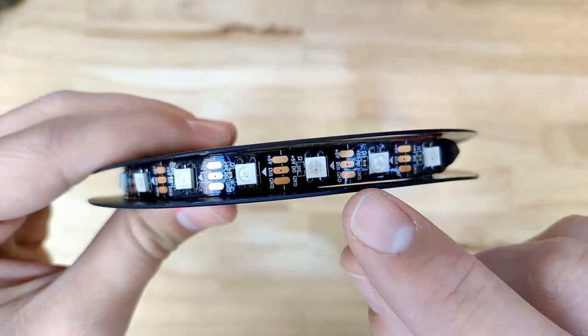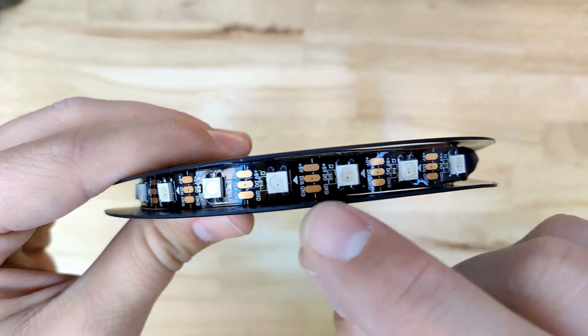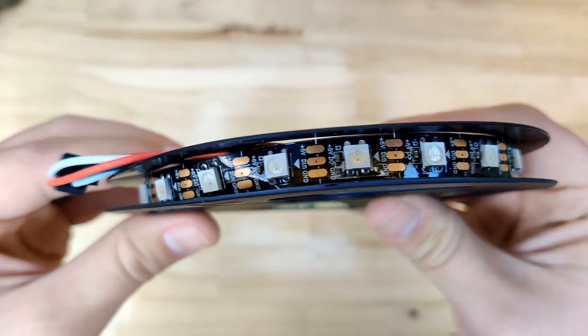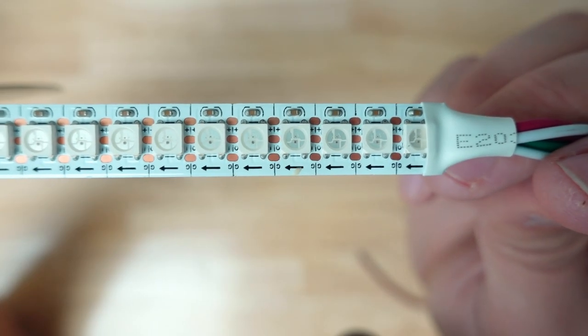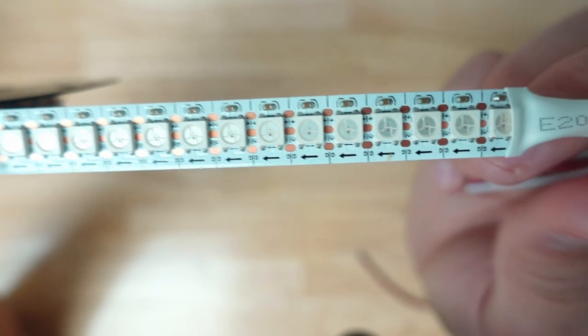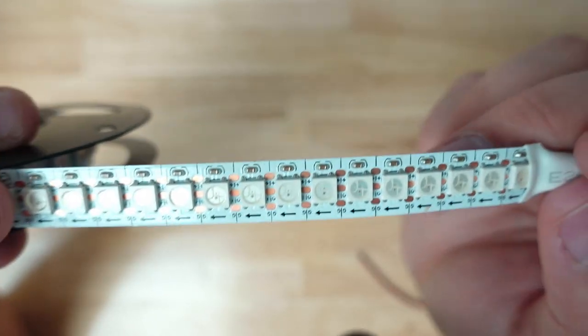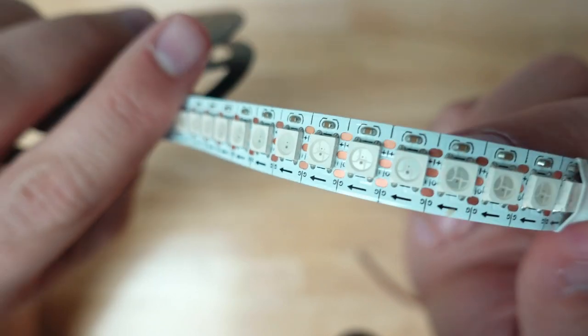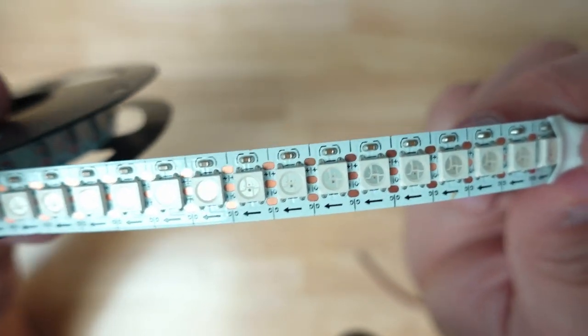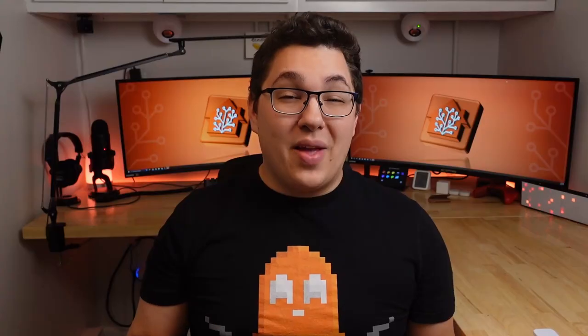For an LED strip I originally started with a WS2812B strip that had 60 LEDs per meter but later on I opted to change to a higher density strip that has 144 LEDs per meter. The reason why I switched is that the higher the density of LEDs the more even the lighting is, and although 60 LEDs per meter is fine for this project I wanted to make sure I had plenty of density.